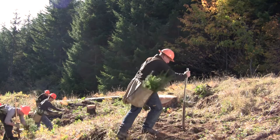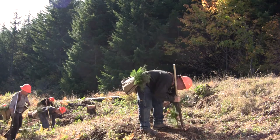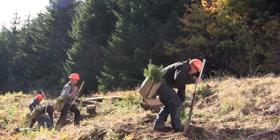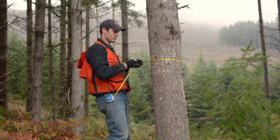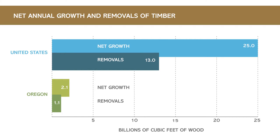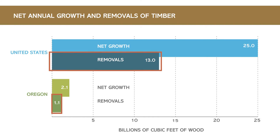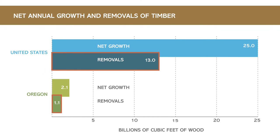An important concept of sustainable timber management is that harvest and growth must be balanced. If we cut more wood than we grow, forests will be diminished over time. To avoid this, we measure forest growth and keep track of timber harvest. This chart, based on U.S. Forest Service data from 2017, shows timber net growth and harvest for the U.S. and Oregon in billions of cubic feet. Net tree growth equals gross growth minus tree mortality. This can be thought of as the maximum potential timber harvest. In both Oregon and the U.S., slightly more than half of the timber net growth is harvested each year.